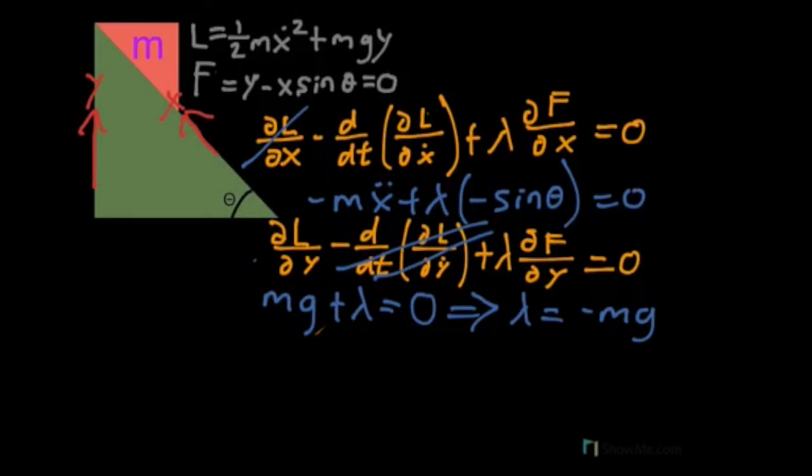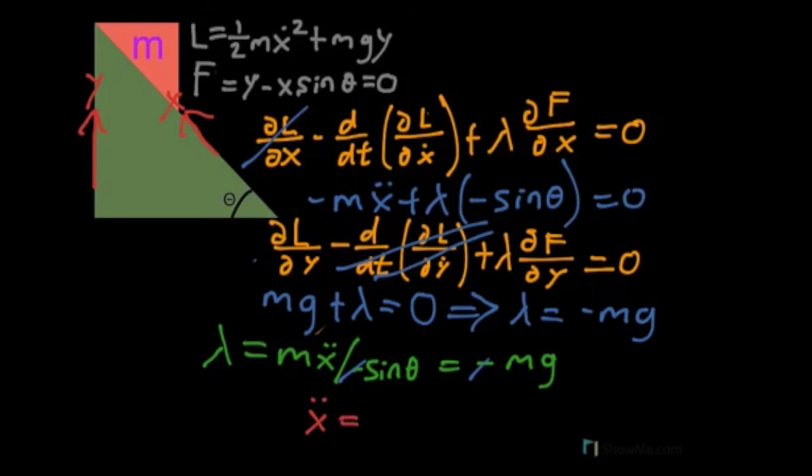And so lambda from the top, which is simply equal to mx double dot divided by negative sine theta, also equals minus mg. And so we have the negatives cancel out. And our final result is that x double dot is equal to mg sine theta over m, or simply g sine theta.